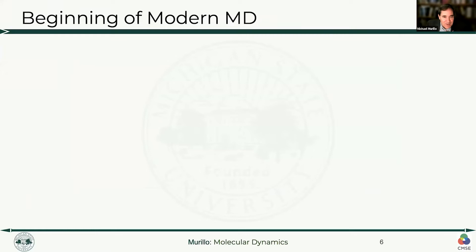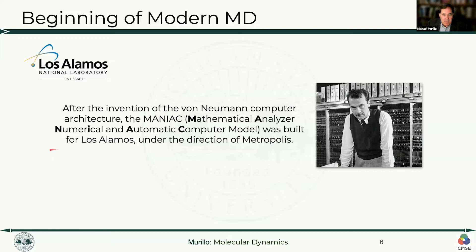In my view, this all started at Los Alamos National Laboratory, my former employer. In the 1950s, Los Alamos bought one of the first supercomputers called MANIAC, built by Nicholas Metropolis. You might have heard of Metropolis because he not only ran the computer division at Los Alamos in the 1950s, but he's also the inventor of the Metropolis Monte Carlo algorithm. If you've ever done Monte Carlo, you've probably heard of Metropolis in that context.